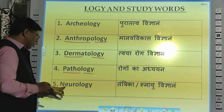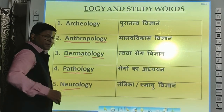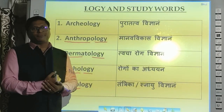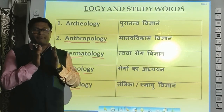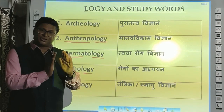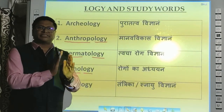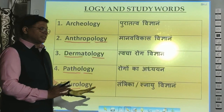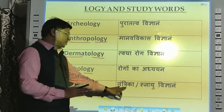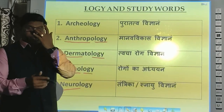And last is Neurology. 'Neuro' relates to your nervous system — your अश्नायू तंत्र. The branch of medicine in which the study of disorders related to your nerves or nervous system is conducted, that is called Neurology — तंत्रिका या अश्नायू विज्ञान.